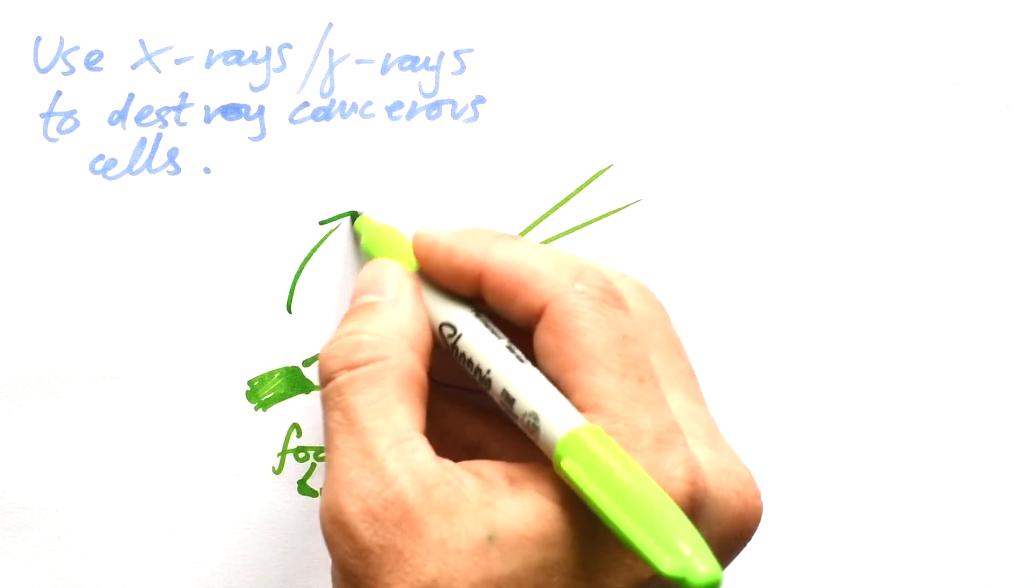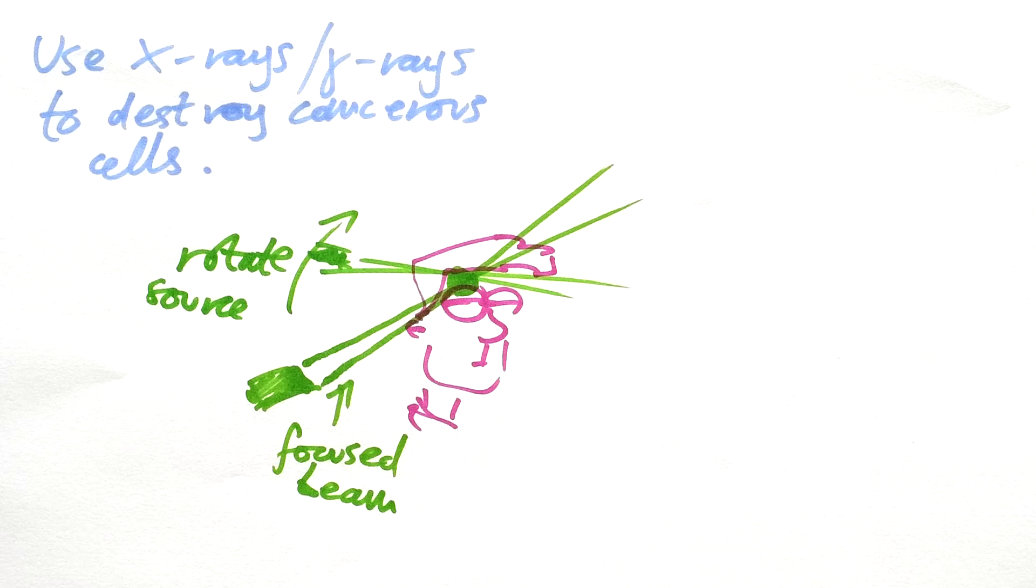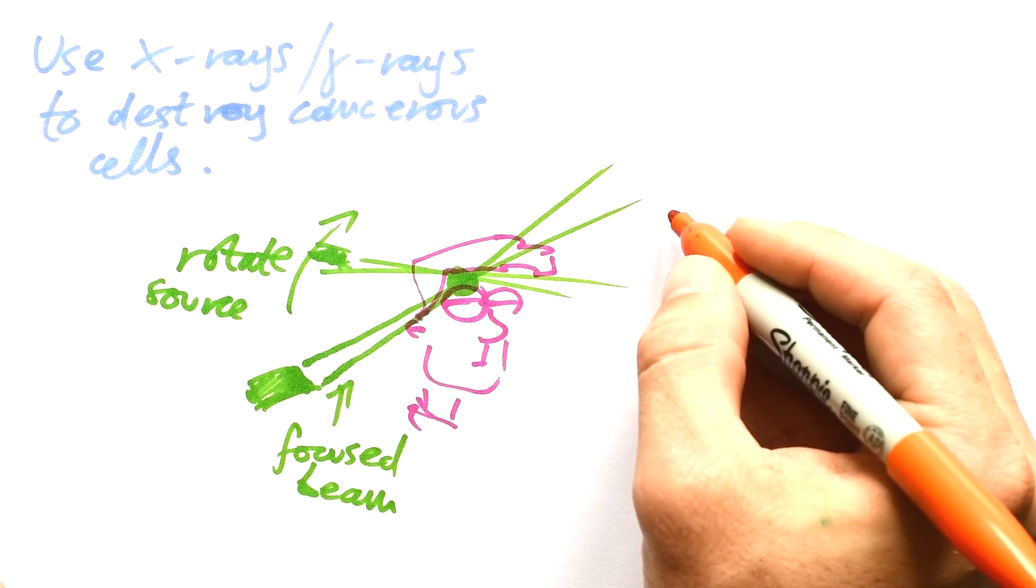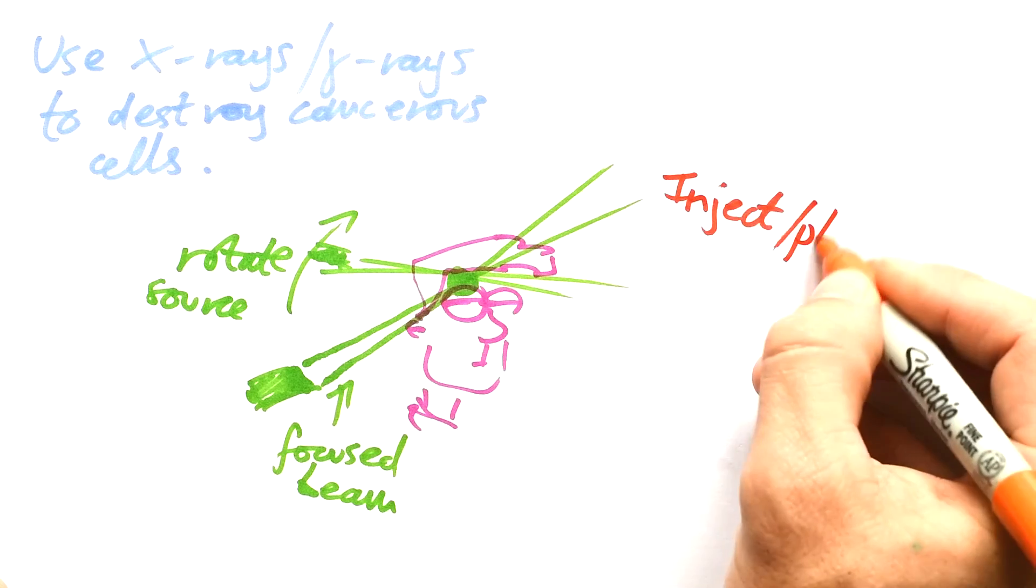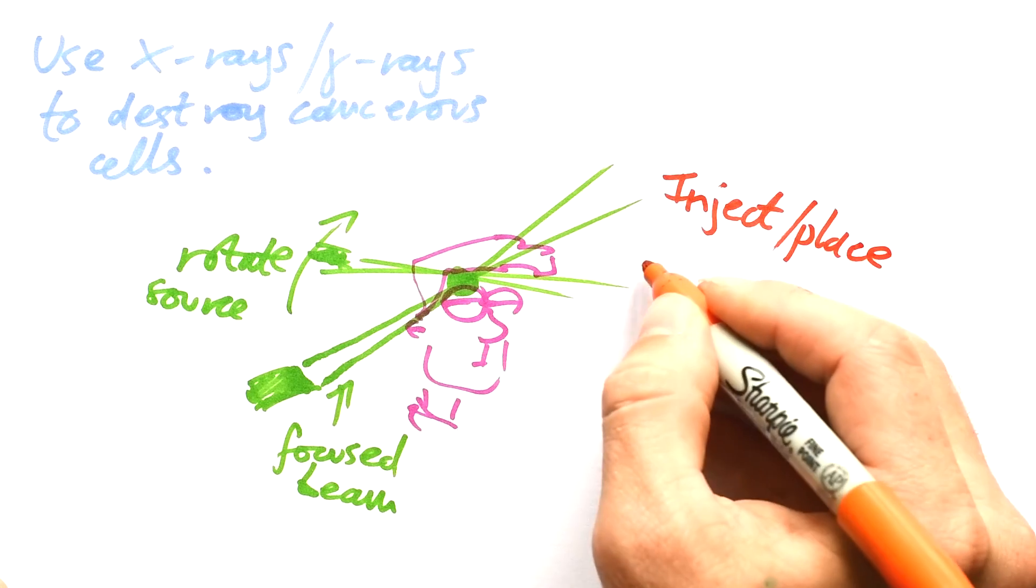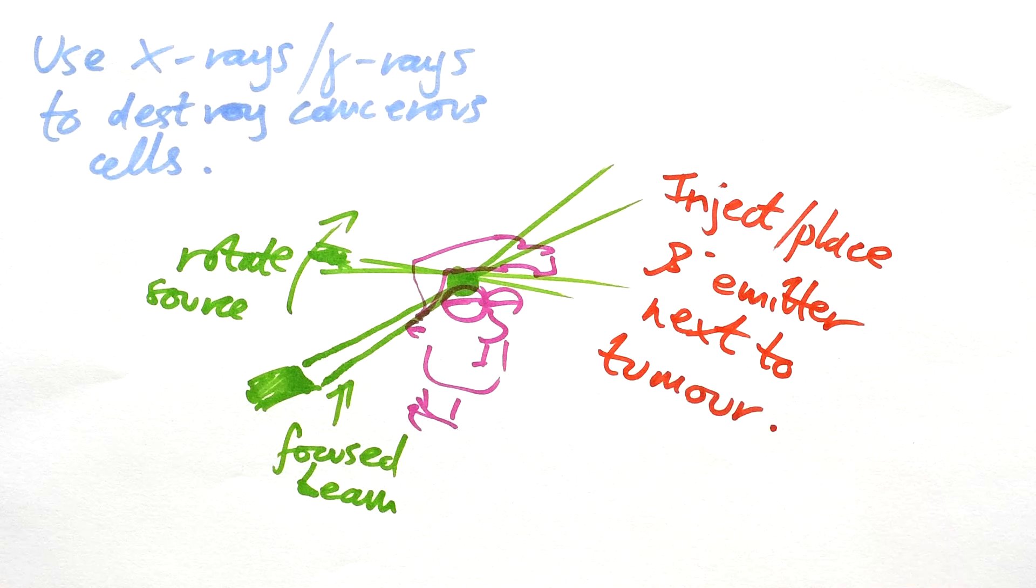Of course, another thing you can do is rotate the source. If we rotate it around, that means again that every healthy part of your brain gets a limited dose of radiation. Last thing that you can do, similar to the tracers, you can inject or place a beta emitter next to the tumour. We know that beta packs more of a punch than gamma. And so putting that right next to a tumour will cause it a heck of a lot of damage.